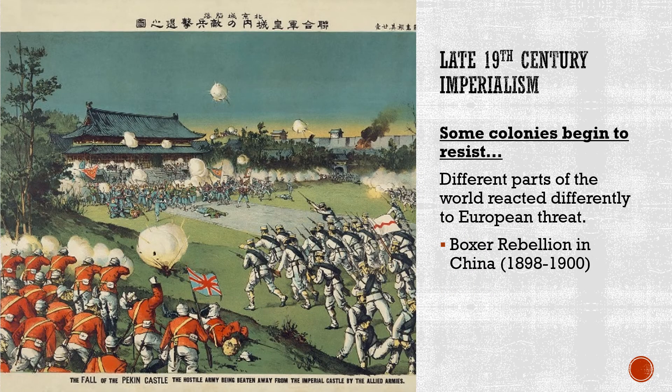Not all of the world took it lying down — that's another part of history you should know. Whenever possible, many of these colonies fought back against the Europeans. Different parts of the world reacted differently to the European threat. One example is the Boxer Rebellion in China, which lasted for two years between 1898 and 1900 — it ultimately failed, but it was a major act of defiance against European powers. Another example was India's Great Mutiny in 1857, which again was a failed attempt to push out the British.